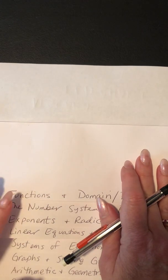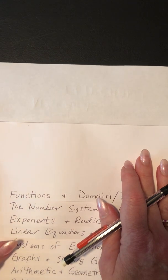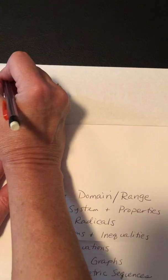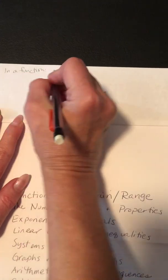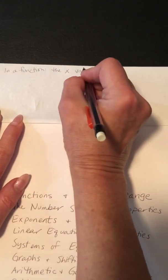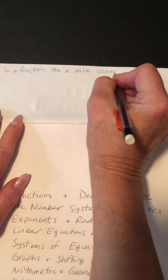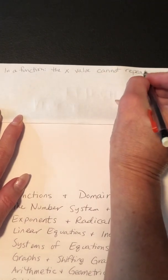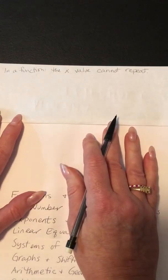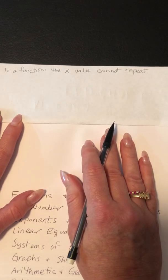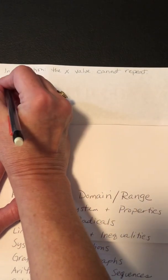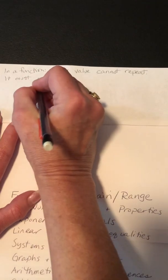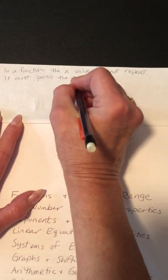A function is a relation, or a set of ordered pairs, or a graph where the X value cannot repeat. So in a function the X value cannot repeat. It also has to pass the vertical line test, which means if you draw a vertical line straight down the graph and it hits the graph in more than one spot, it's not a function. So it must pass the vertical line test.